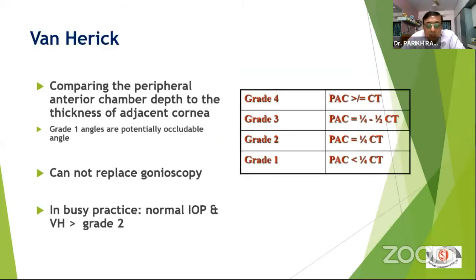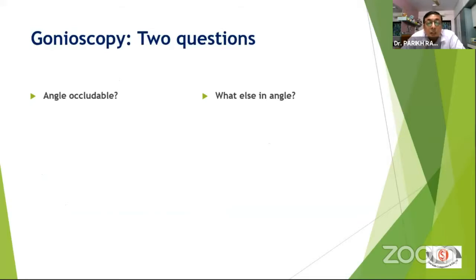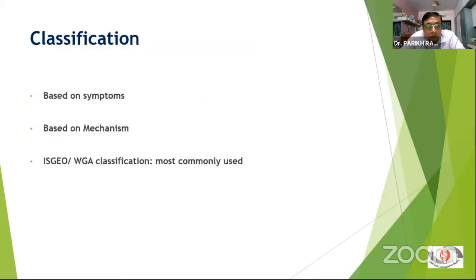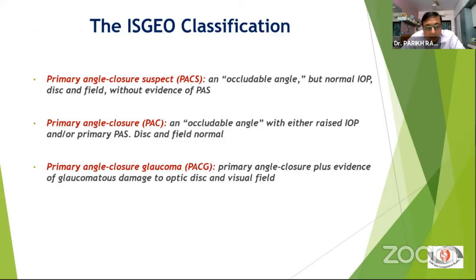For clinical examination, the Van Herick test is good but cannot replace gonioscopy. If you are busy and the patient has normal IOP and Van Herick grade more than 2, they probably don't have angle closure, but I would still not say it replaces gonioscopy. During gonioscopy, remember we are trying to answer two questions: one, is the angle occludable; and two, what else is in the angle — both require different examination situations. Otherwise you'll miss the angle closure if you do full light or indent directly, and diagnose open angle by mistake.